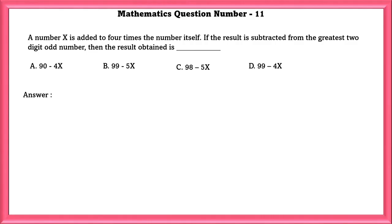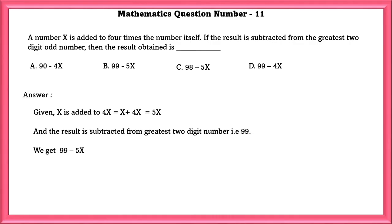Mathematics Question Number 11: A number X is added to 4 times the number itself. If the result is subtracted from the greatest 2 digit odd number, then find the result obtained. Given X is added to 4X, so that will become 5X. And the result is subtracted from the greatest 2 digit number which is 99. So, we get 99 minus 5X.